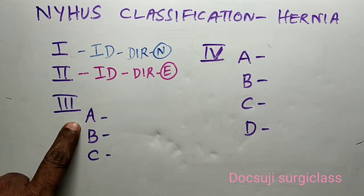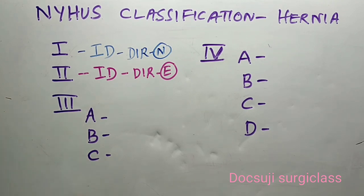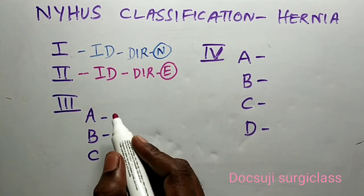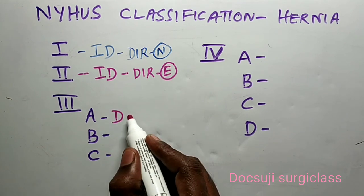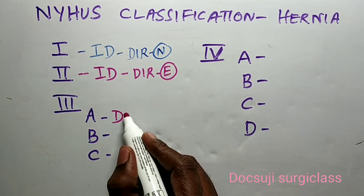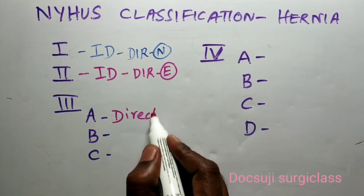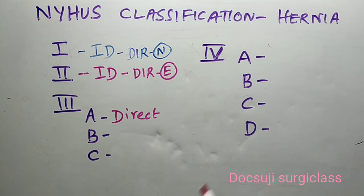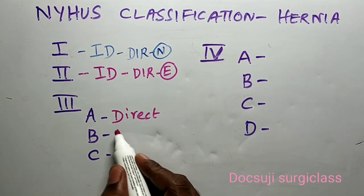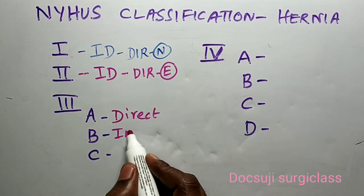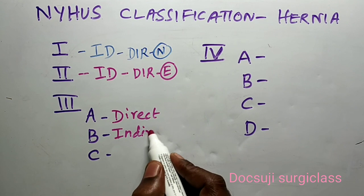Next is Type 3. Type 3 has 3 subtypes. Type 3A is a direct inguinal hernia. Type 3B is an indirect inguinal hernia.